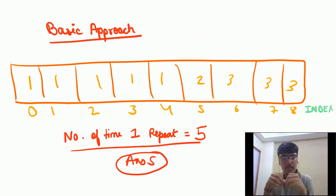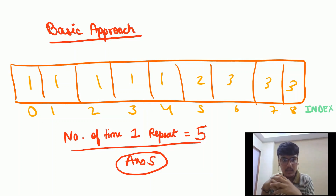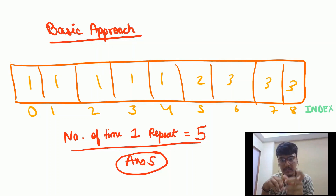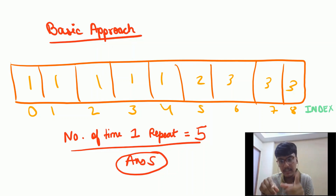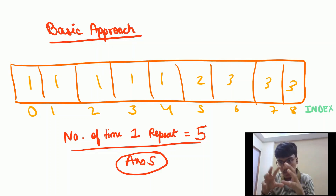Before diving into any coding section or approaches, we will look at the problem statement with the help of an example. This example has a size of 9 and indices ranging from 0 to 8. The answer is 1, because 1 is repeating for the maximum number of times, that is 5. The size of the array is 9 and 9 divided by 2 is 4.5. Since 5 is greater than 4.5, the answer is 1, neither 2 nor 3.